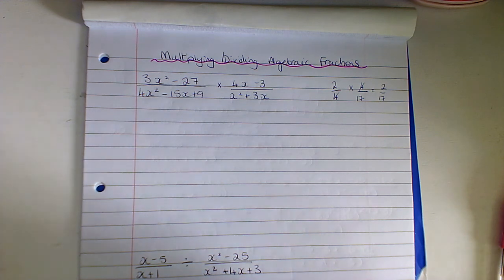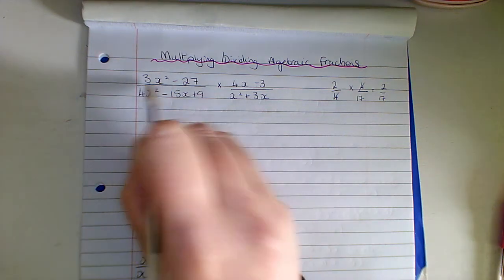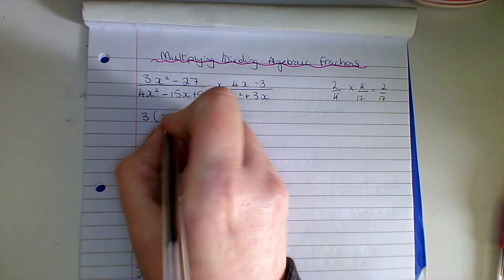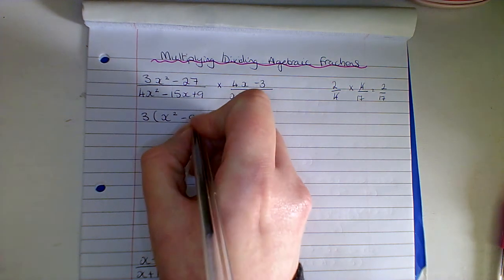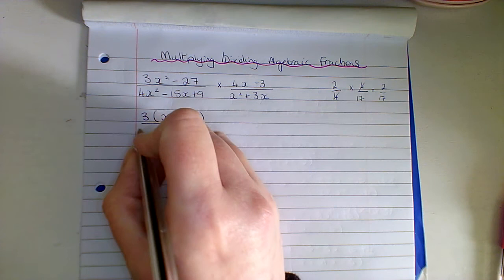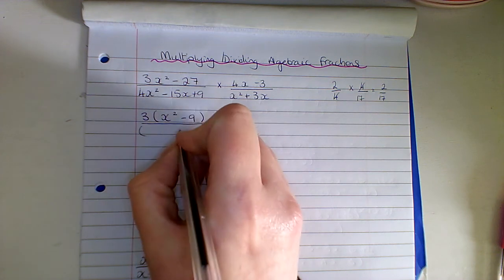Before I start, I'm going to factorize everything as best I can. I won't be able to factorize everything, but whatever I can factorize, that's what I'm going to start off with. So I'm going to have a look here and I have 3x² - 27, so I'm going to factorize this and I'm going to say 3 times (x² - 9) over, and we're going to have some brackets here.